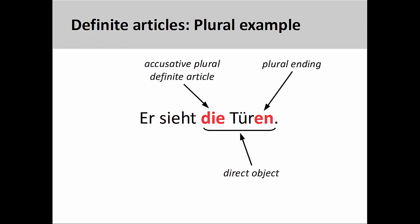But how do I know it's not plural? In the sentence Er sieht die Türen — He sees the doors — the ending on the noun informs us that we are dealing with a plural form. Since we still have Er as the subject, Türen must still be the direct object, and Die a plural definite article in the accusative case.